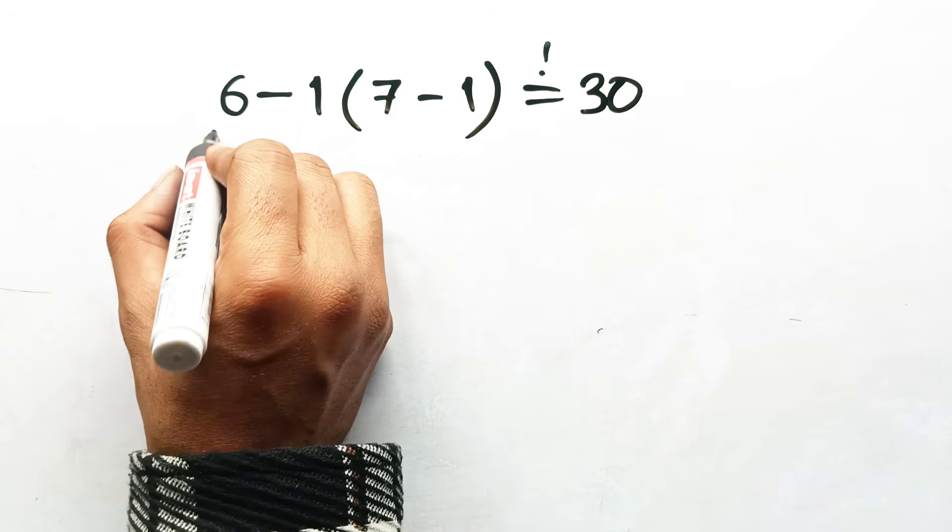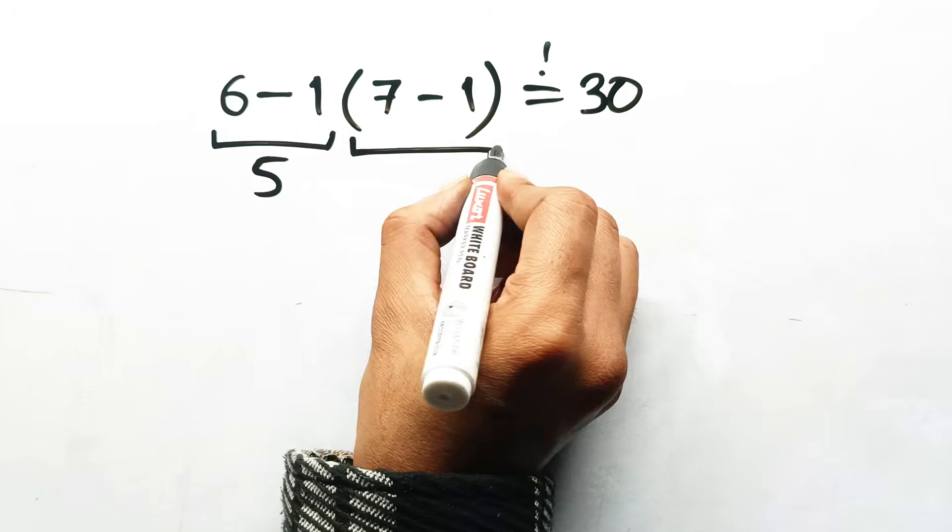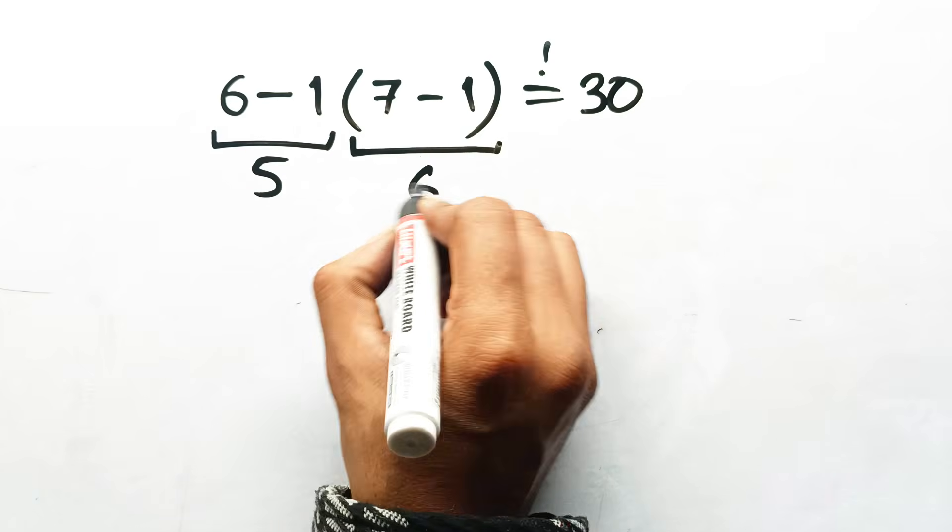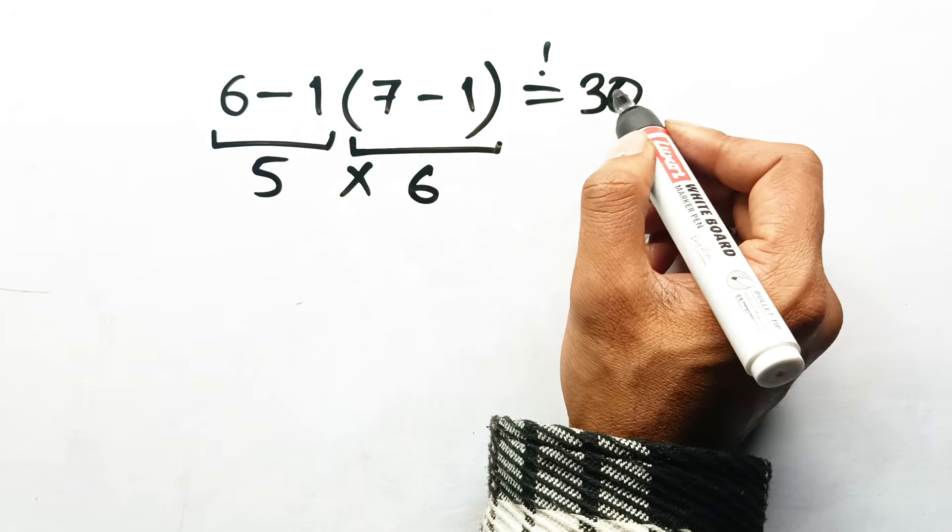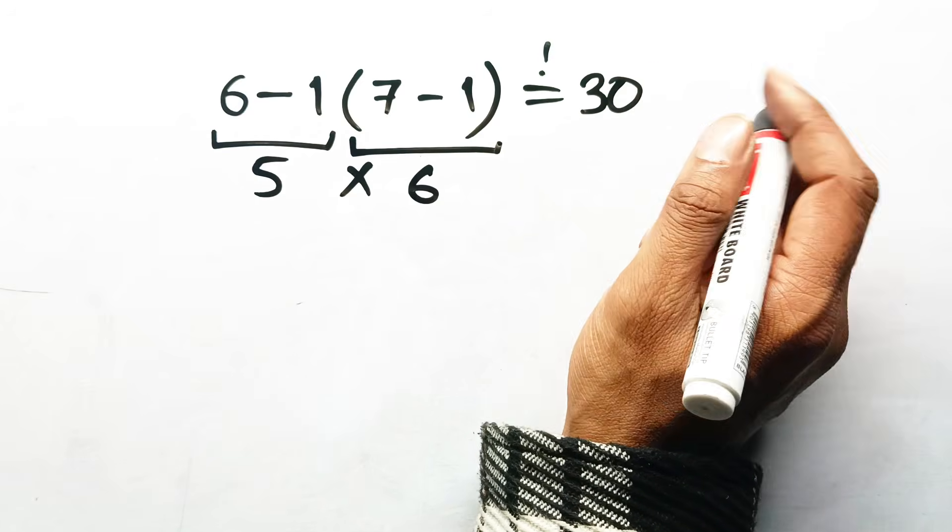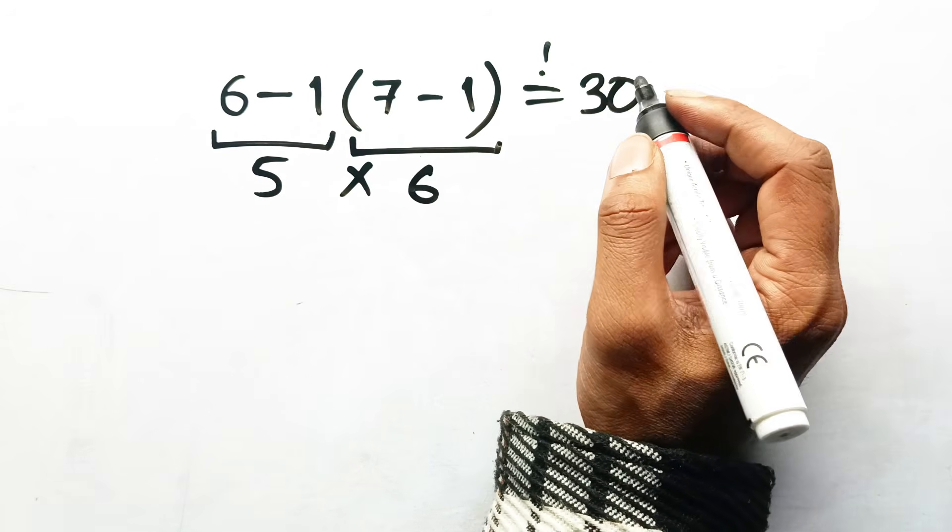You look at 6 minus 1, that's 5, and then inside the parentheses, 7 minus 1 is 6. So multiply them together. 5 times 6 equals 30. Feels neat, feels complete. Easy answer. Confident. Boom. 30.